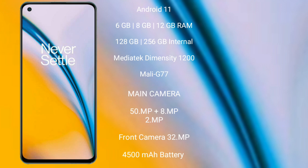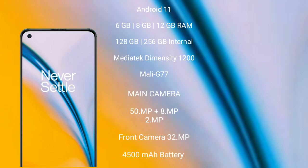The OnePlus Nord 2 features a rear-side triple camera setup with 50MP, 8MP, and 2MP lenses, and a front camera of 32MP. It has a 4500mAh battery with 65W fast charging support.